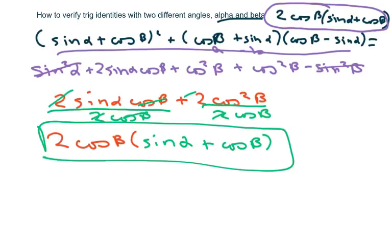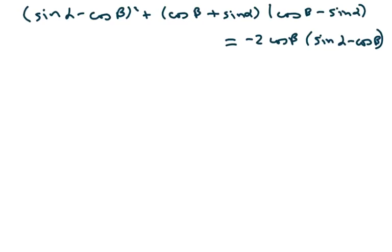And the next problem is very similar, so basically do the same thing, but has a negative here. I'm going to write small, sine squared of alpha minus 2 sine of alpha cosine of beta plus cosine squared of beta.